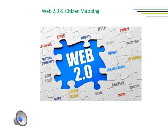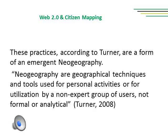New services enable new practices of communication with spatially explicit references. According to Andrew Turner, author of Introduction to Neogeography, these practices are a form of emergent neogeography — geographical techniques and tools used for personal activities or by a non-expert group of users, in a non-formal or non-analytical way.